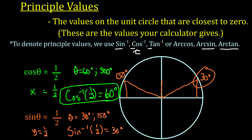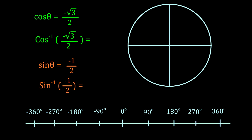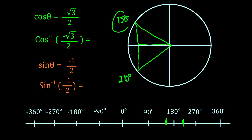Once we introduce negatives, things get a bit more complex. Looking at the number line, when is cosine θ = -√3/2? That x-value falls at 150 degrees and at 210 degrees. On the number line, 150 is closer to zero than 210, so the cosine inverse of -√3/2 gives a principal value of 150 degrees.